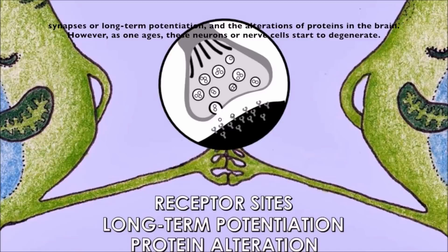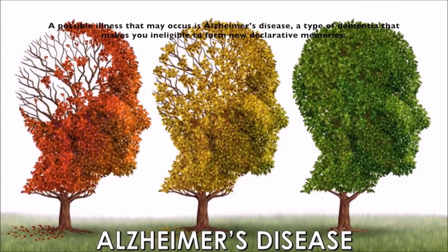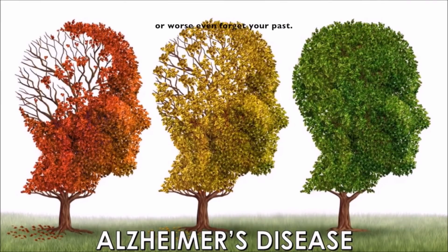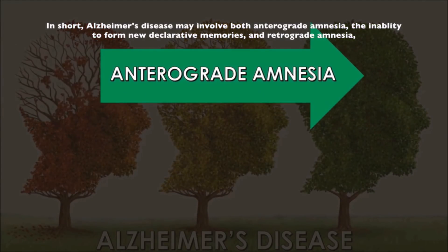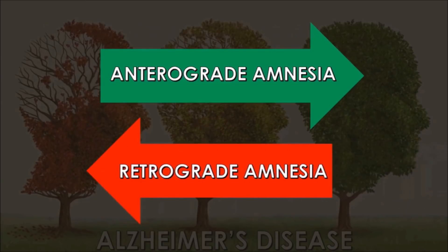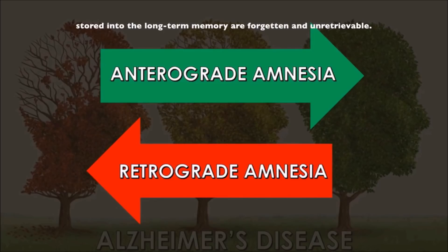However, as one ages, these neurons or nerve cells start to degenerate. A possible illness that may occur is Alzheimer's disease, a type of dementia that makes you unable to form new declarative memories or, even worse, forget your past. Alzheimer's disease may involve both anterograde amnesia — the inability to form new declarative memories — and retrograde amnesia — the loss of memory that occurred before the incident — due to interruptions in the consolidation process, wherein non-permanent information being stored into long-term memory is forgotten and unretrievable.